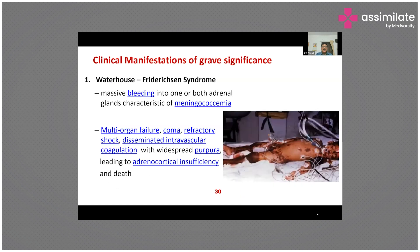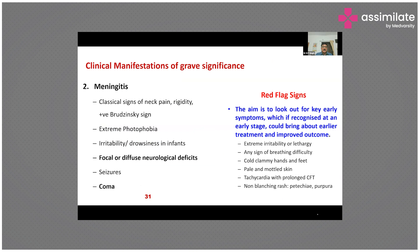Another clinical manifestation is Waterhouse-Friderichsen syndrome, characterized by massive bleeding into one or both adrenal glands, leading to multi-organ failure, coma, refractory shock, and DIC with widespread purpura causing adrenocortical insufficiency. Third, meningitis is very common, presenting with classical signs of neck stiffness, Brudzinski's signs, extreme photophobia, irritability, focal neurological deficits, and sometimes seizures and coma.